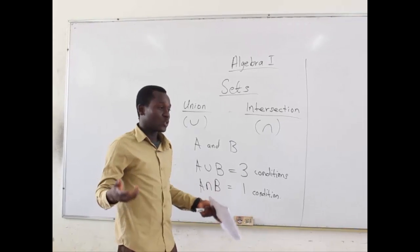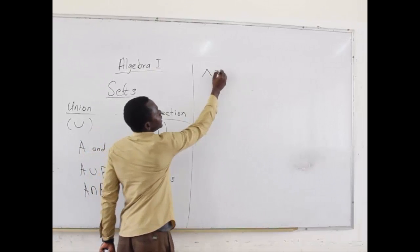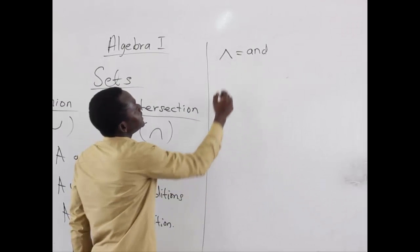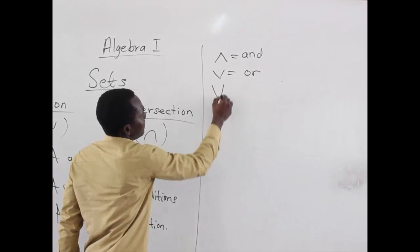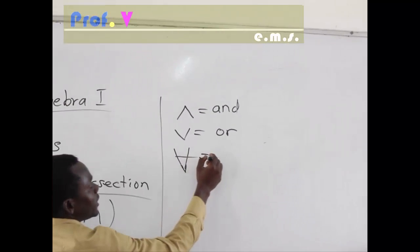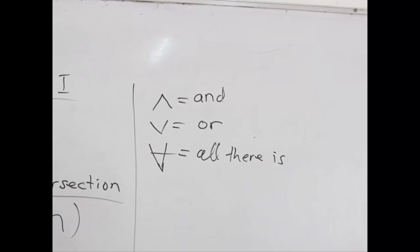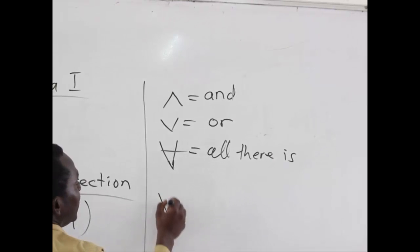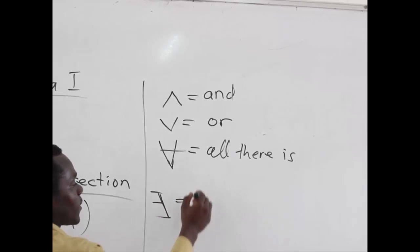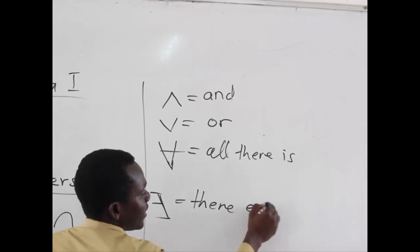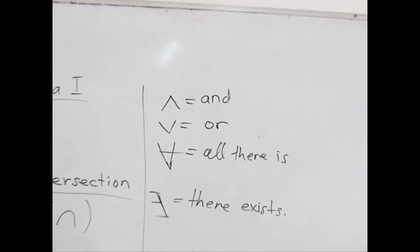Any time you see this symbol — like an apex or caret sign — it means 'and.' When we see the V-shaped sign, it means 'or.' When we see a V-shaped sign with a cross through it, we call it 'for all' or the universal quantifier. And when we have this symbol — an inverted or naturally inverted key — we call this 'there exists.'